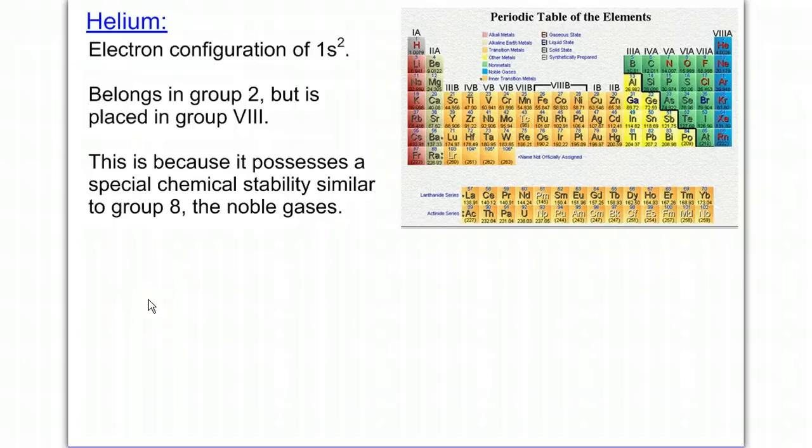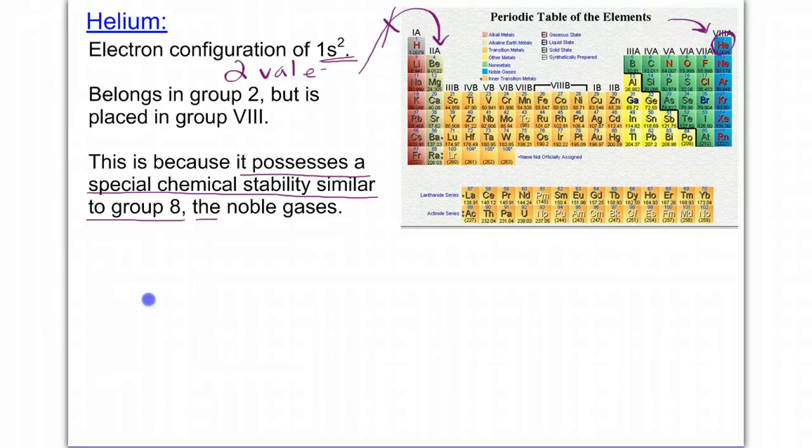Helium has a configuration of 1s2, which gives it two valence electrons. Normally you would think it'd be in group 2, but that's not the case. They actually have it placed in group 8, and that's because it possesses a special chemical stability which is similar to the other elements in group 8, which are known as the noble gases. Though all these elements in this group possess 8 valence electrons, helium will be the exception containing only 2 valence electrons.